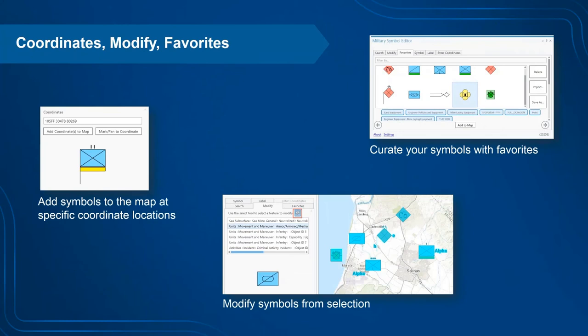You can add symbols to the map using the Map Point tool, or at specific coordinate locations. We used the same code as the Coordinate Conversion tool to let you enter a specific coordinate in any notation format, click the Mark/Pan to Coordinate button for a preview of where the symbol will be located, and then click Add Coordinates to Map to place it at that specific location.